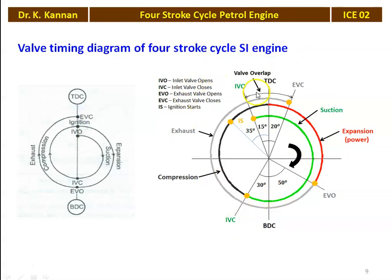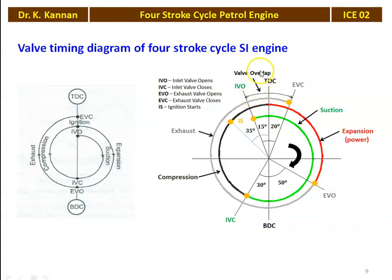When you look at the diagram closely, there is a period when both the exhaust valve and the inlet valve are open simultaneously. For the first cycle, the exhaust valve closes 20 degrees after TDC, whereas the inlet valve opens 15 degrees before TDC for the next cycle — so there is a valve overlap. This simultaneous opening of the inlet valve and the exhaust valve is called valve overlapping. We cannot avoid valve overlap and it must be optimized and carefully designed, because if there is too much overlapping, the fresh air-fuel mixture entering the engine cylinder will escape along with the exhaust gases. So you have to carefully design the engine for valve overlapping.